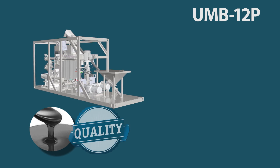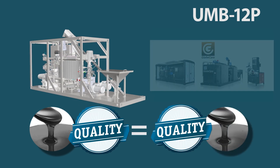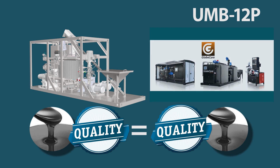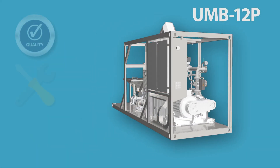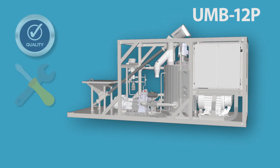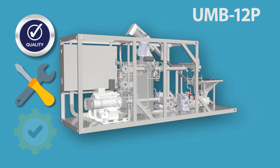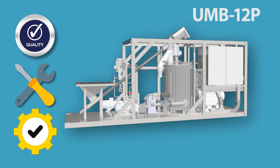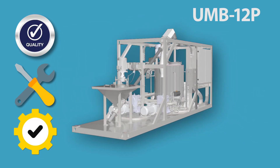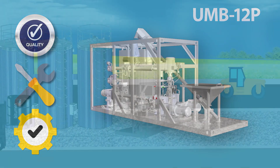The quality of the binder produced by the UMB-12P continuous unit is not inferior to that of binders produced by batch units. The UMB unit is more reliable due to the smaller number of mixers and mills, easy to maintain due to automation of the modification process, and requires less material consumption.